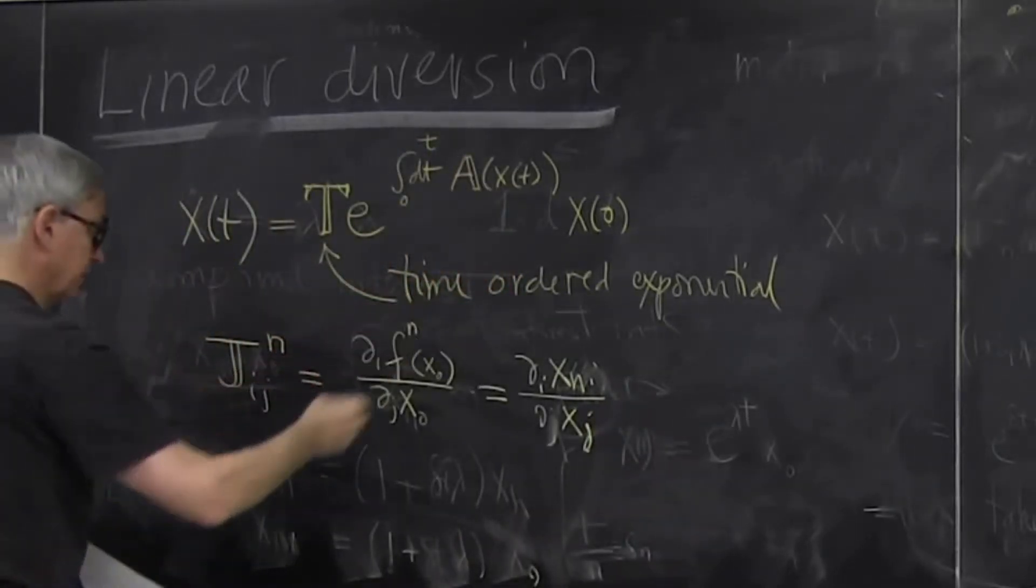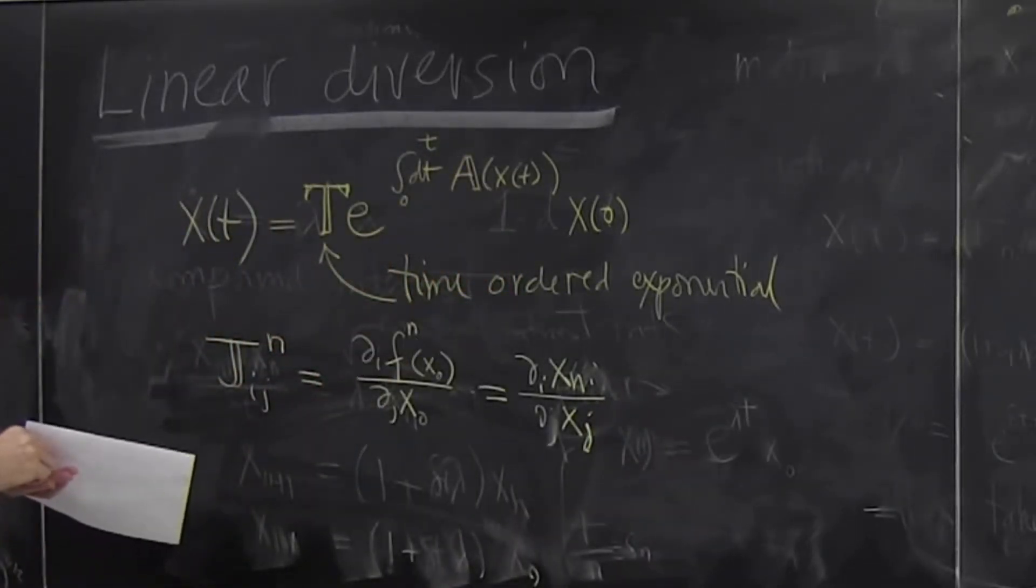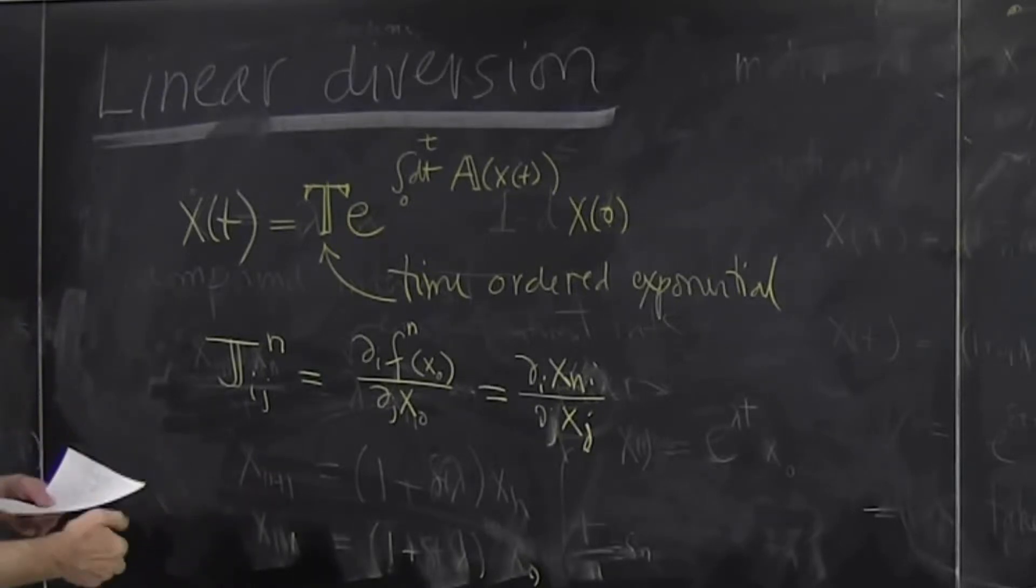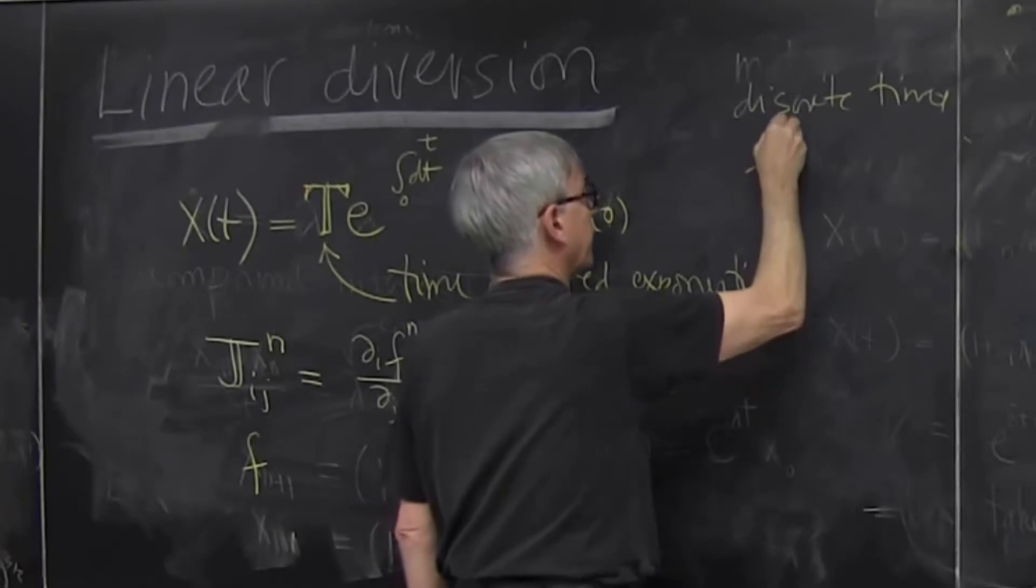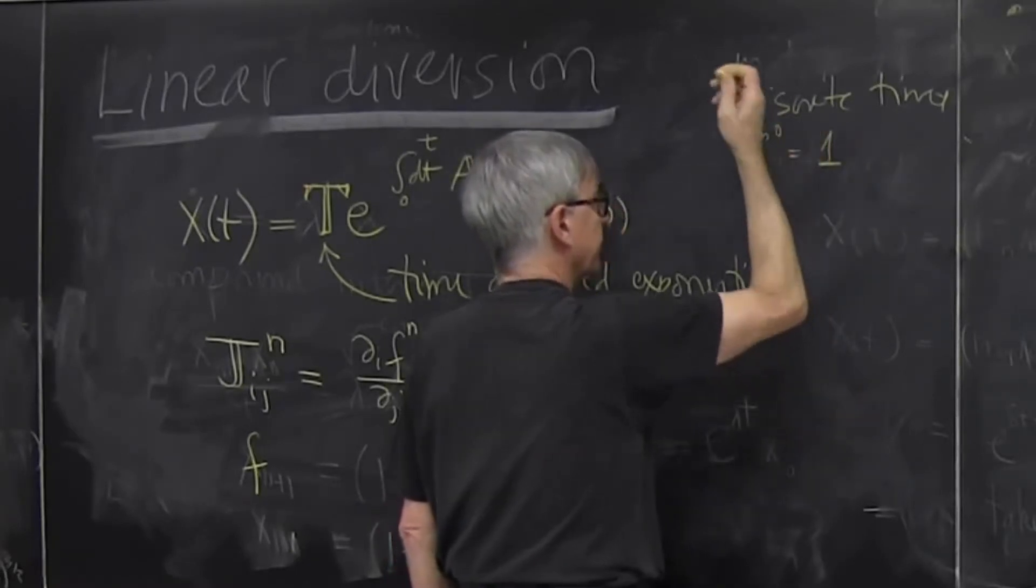It's the same definition continuous in discrete, but for discrete time, we can use a very famous rule. f of 0 is identity, nothing changes.